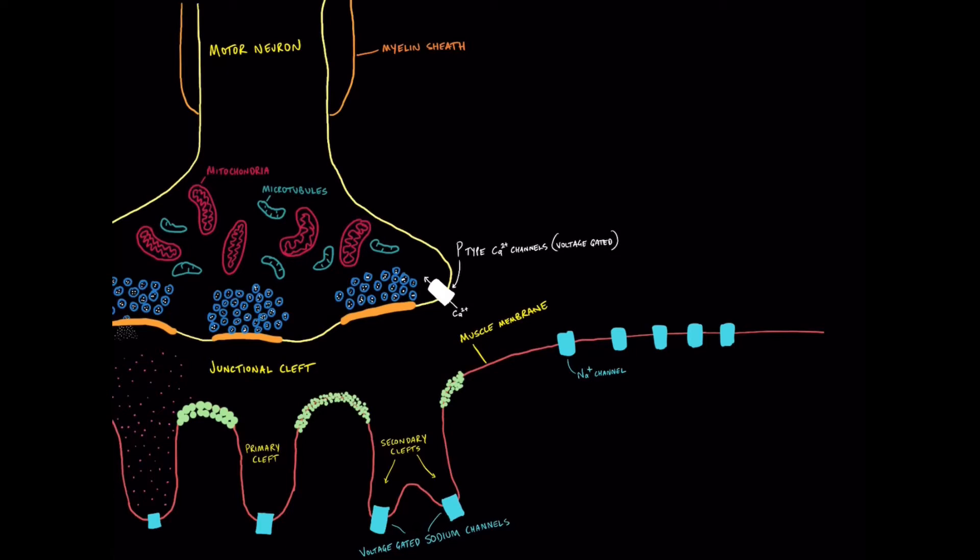And it turns out that if you double the concentration of calcium in the extracellular fluid, you'll have a 16-fold increase in the amount of acetylcholine released into the junctional cleft. So there's a very profound relationship between extracellular calcium concentration and the release of transmitter into the junctional cleft. And these P-type calcium channels are how that takes place.